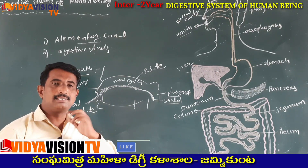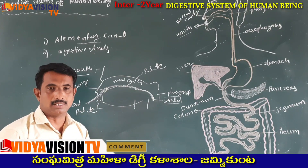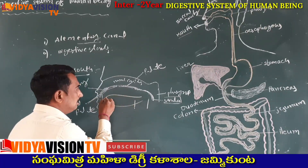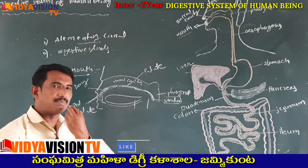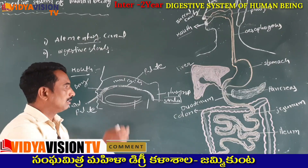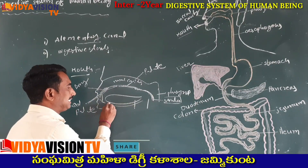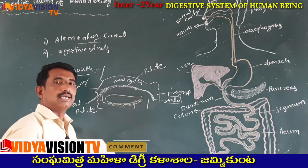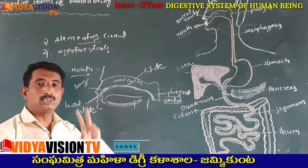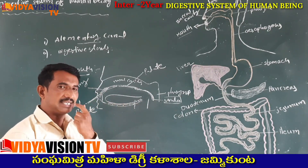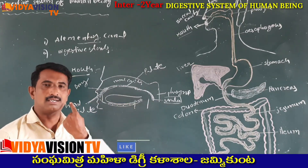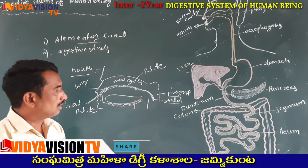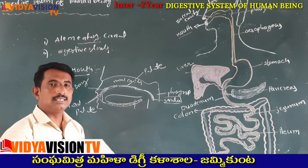Inside the buccal cavity, it contains two main parts: one is the tongue, and the second one is the teeth. Now we will discuss clearly about the teeth.